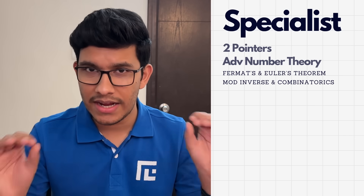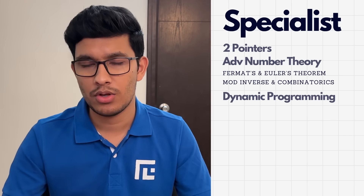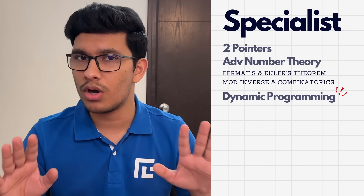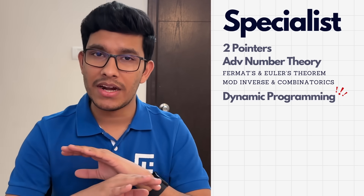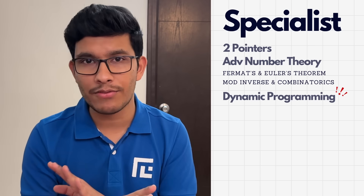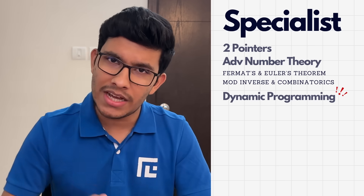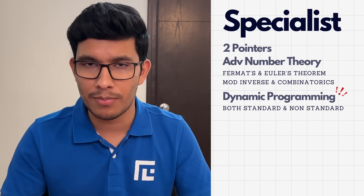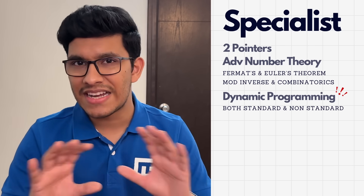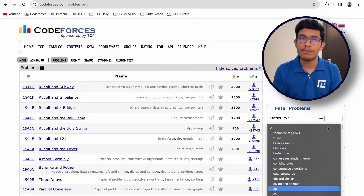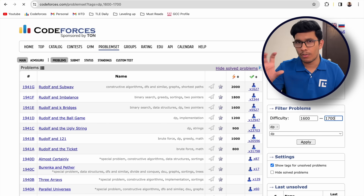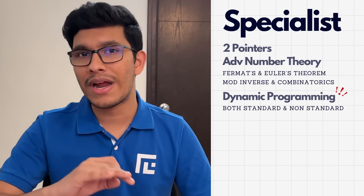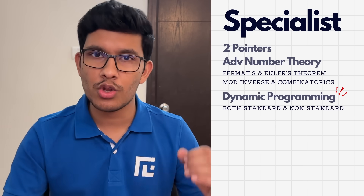The next topic — and the most important in competitive programming after binary search — is dynamic programming. You cannot call yourself a competitive programmer if you're not good at DP, because if you're solving a random problem on Codeforces, the chances it's based on a DP idea are insanely high. Don't expect to become an expert if you can't master dynamic programming. Spend a lot of time on it — solve at least 50 to 100 problems. Start with standard DP problems from the CSES problem set and Codeforces blogs, then solve random DP problems filtered at 1600–1700 rating. Also focus on DP with bitmasking, because as you go forward into graphs and trees, you will see dynamic programming used extensively.